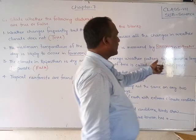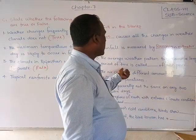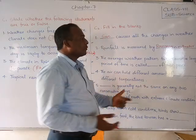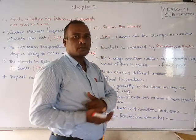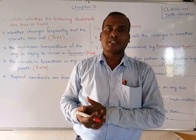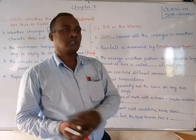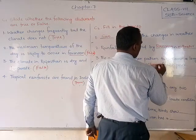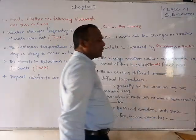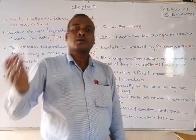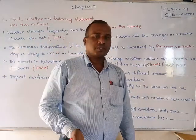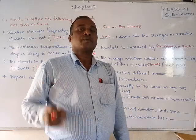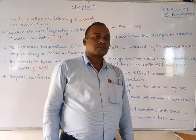Third blank: the average weather pattern taken over a long period of time is called the dash of that place. If we are observing for 25 to 30 years and finding the same pattern, we say that is the climate of that place. Not weather — weather we can find daily — but climate is for a long period. The answer is: climate.